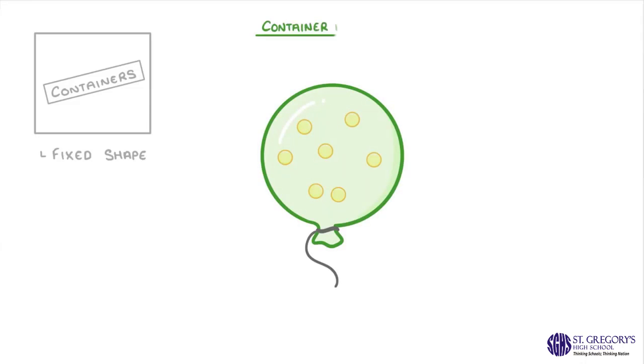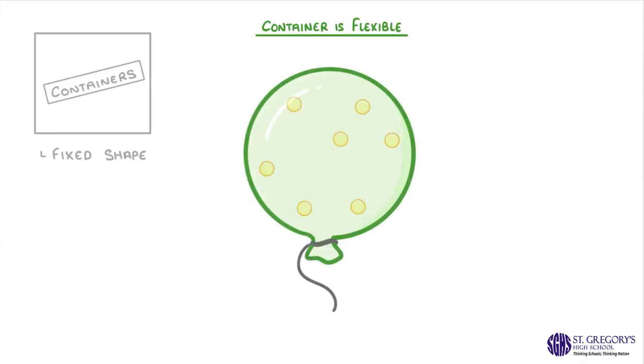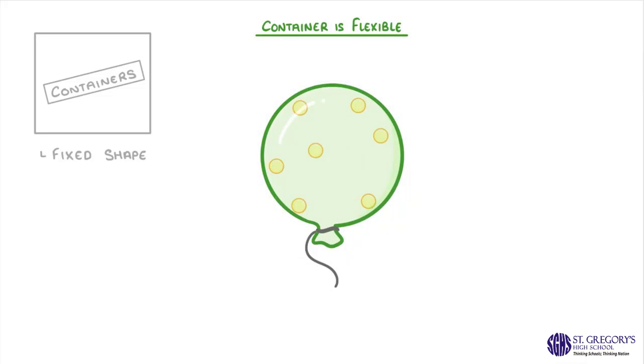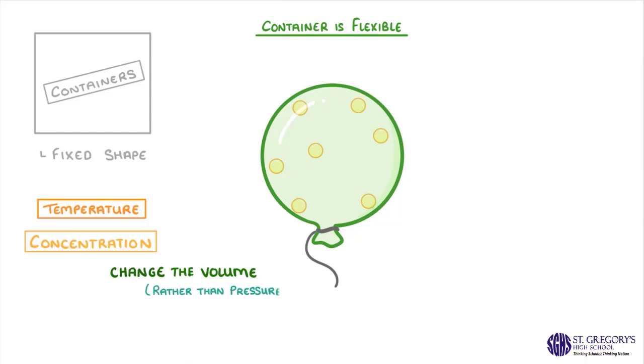The last thing I want to mention is that we've so far been considering our containers as a fixed shape. Sometimes though, like in the case of a balloon, the container is flexible, and so it can expand or shrink. In these cases, changes in temperature and concentration will change the volume of the container rather than the pressure.